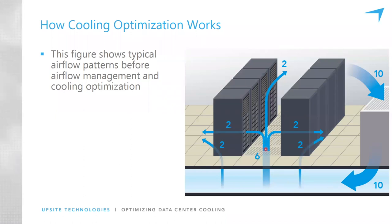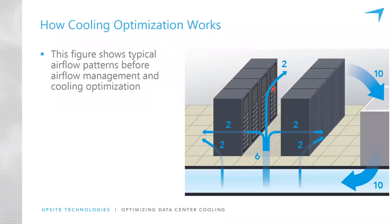Looking at the IT equipment in those cabinets, each row requires two units of air, for a total of four units of conditioned air required by the IT equipment. Here's a statement you don't hear very often: the amount of air moving through the IT equipment is completely independent of the amount of air moving through the cooling units or through the room. You could turn off all the cooling units and there would still be four units of air moving through all the IT equipment — they have their own fans and those flow rates are independent.